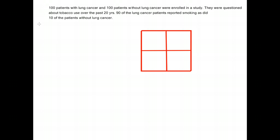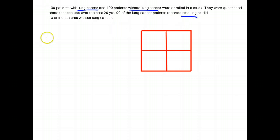Furthermore, we'd like to calculate some quantitative measure of this association. To do this, we'll have to figure out what study type this is. This particular study describes enrolling patients with lung cancer and enrolling a group of patients without lung cancer, then going backwards in time over the previous 20 years and questioning them about smoking. So this particular study describes a case-control study.